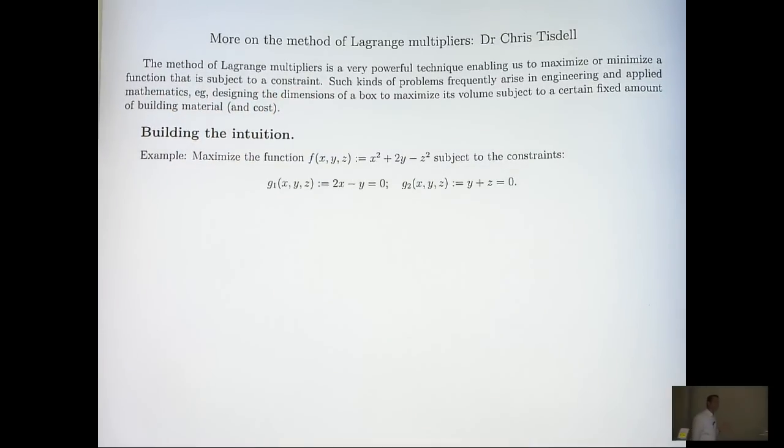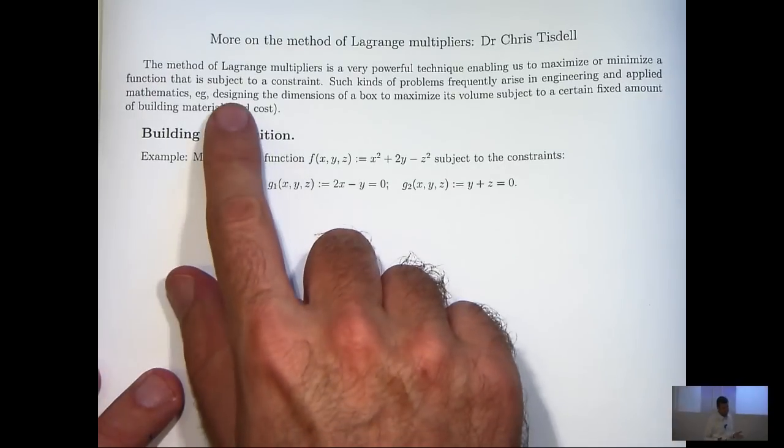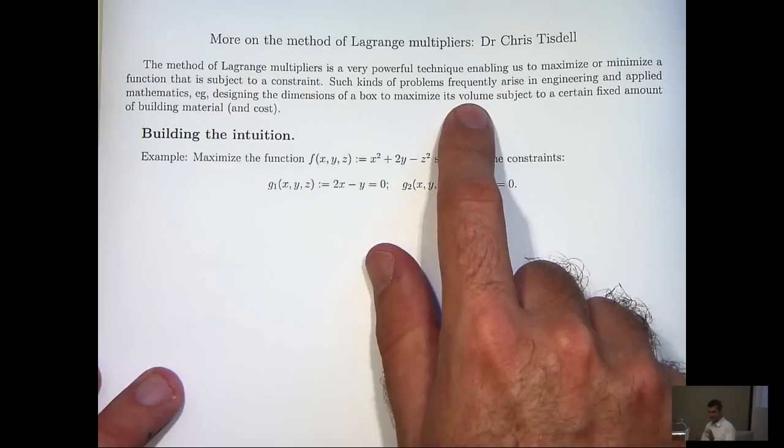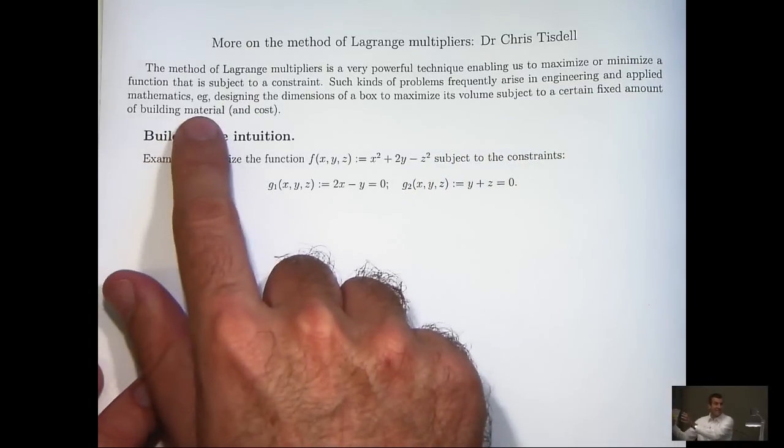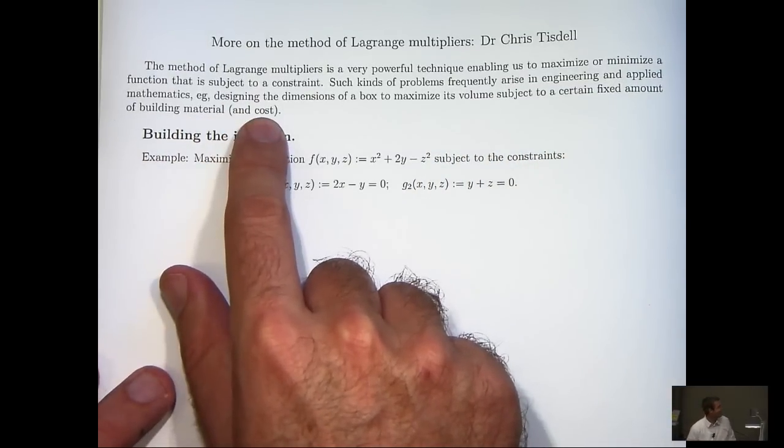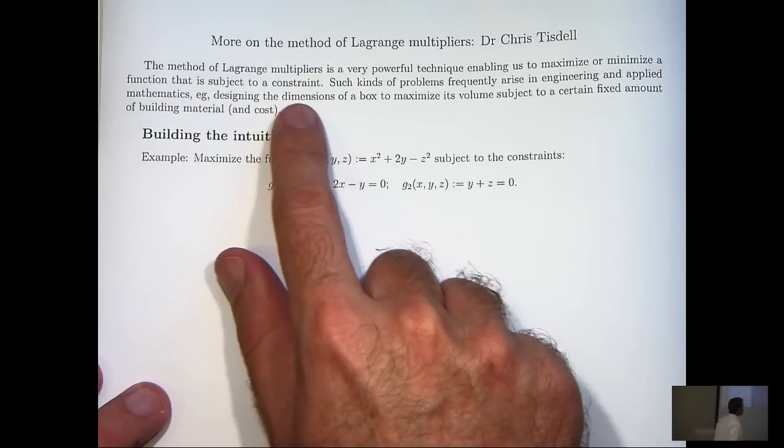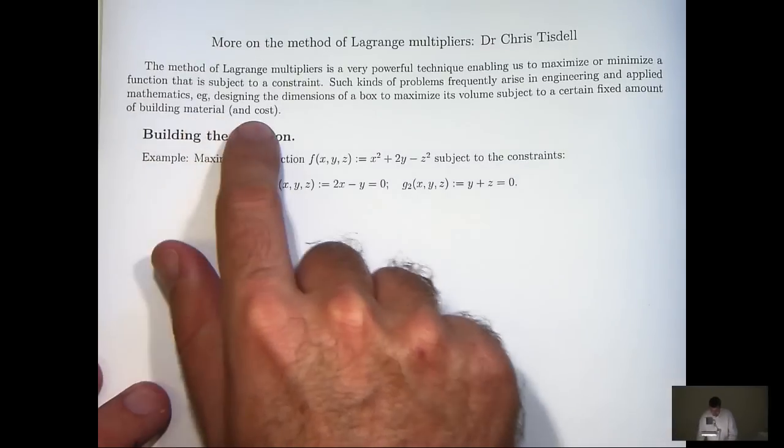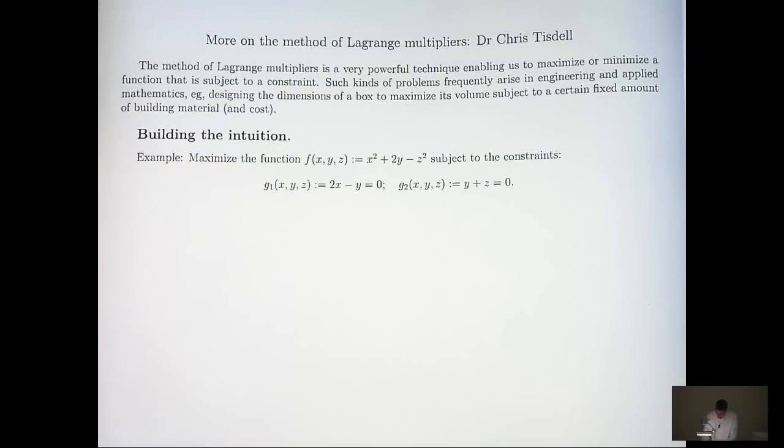Now, where would you see such a problem? Well, in very simple terms, imagine that you're asked to design the dimensions of a box that maximizes the volume subject to a certain fixed amount of building material and cost. The function there that you would want to maximize is the volume of the box and the constraint would be the building material or the cost. But the example I'm going to do is quite theoretical but I hope it gives you a flavor for the importance and the applications of these kinds of methods.